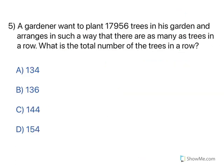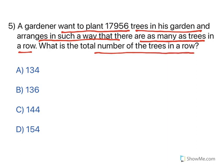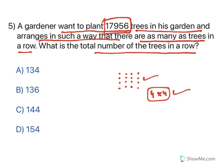Moving to the next one. A gardener wants to plant 17,956 trees in his garden and arranges them such that there are as many trees in a row as there are rows. What is the total number of trees in a row? As many trees in a row means the rows and the trees are equal — it is like a grid. So we have 17,956 and we need to arrange them into such a grid.